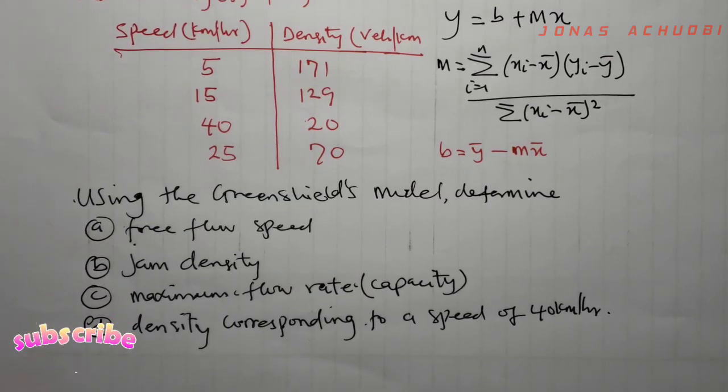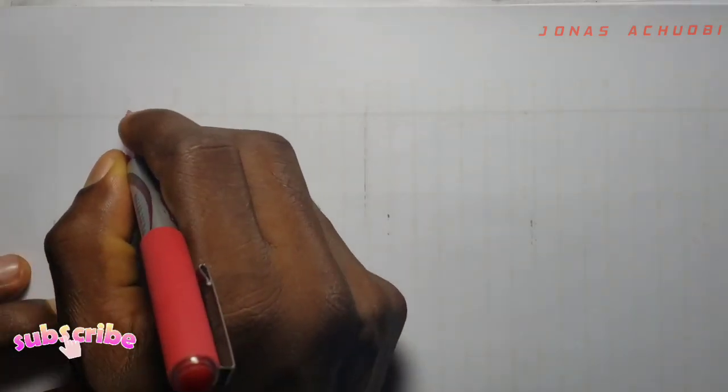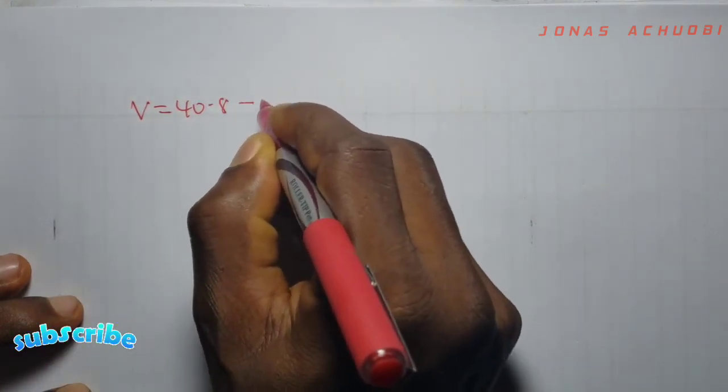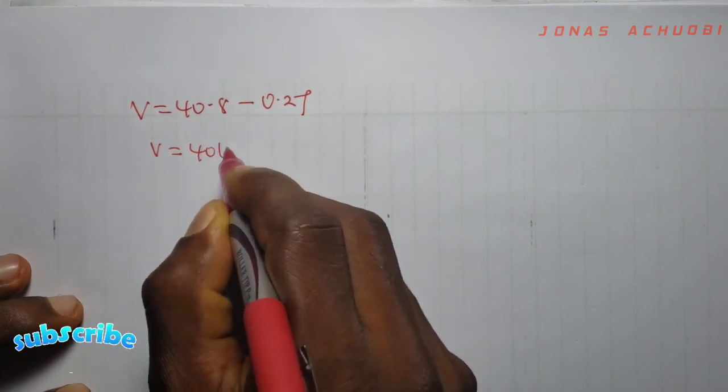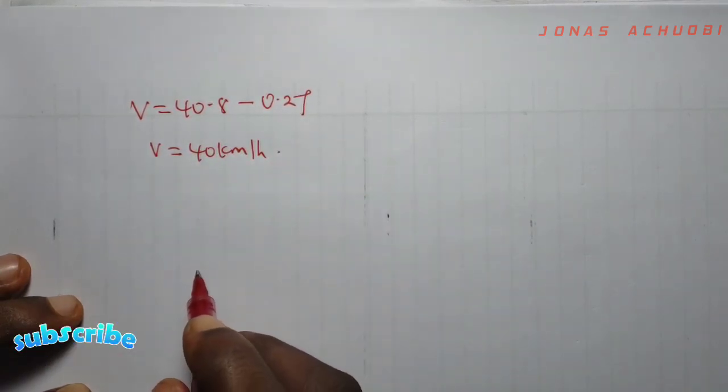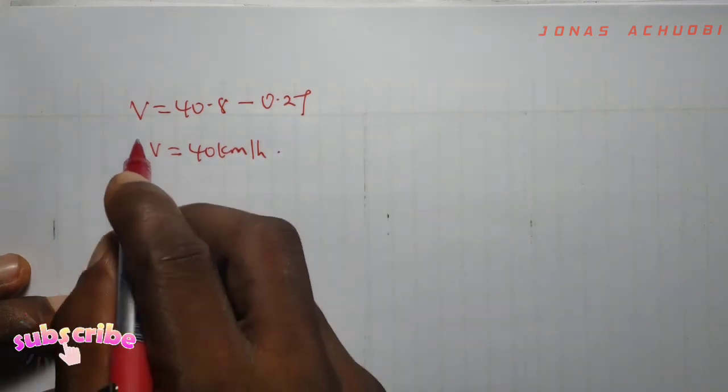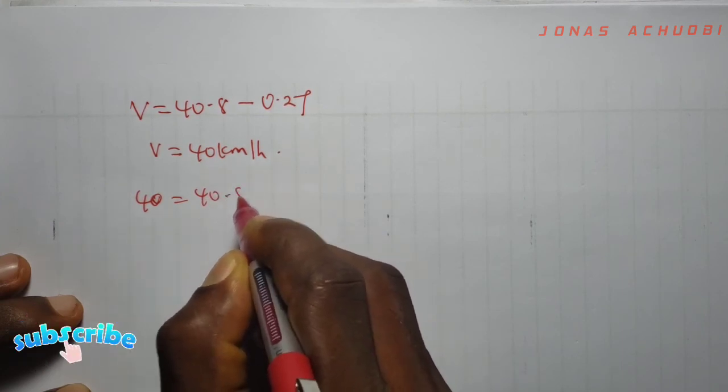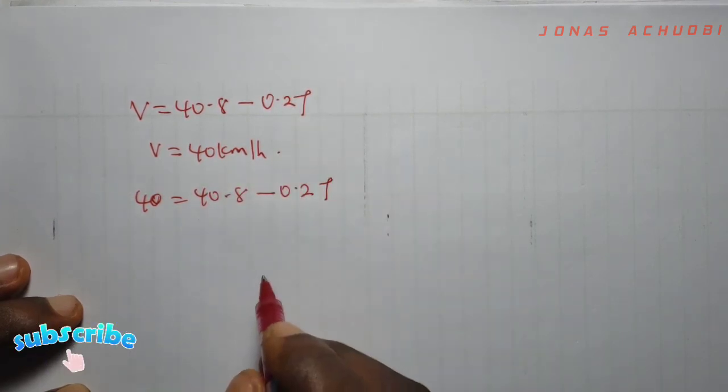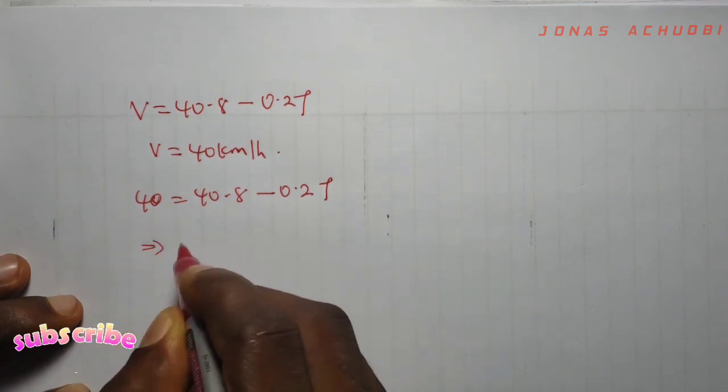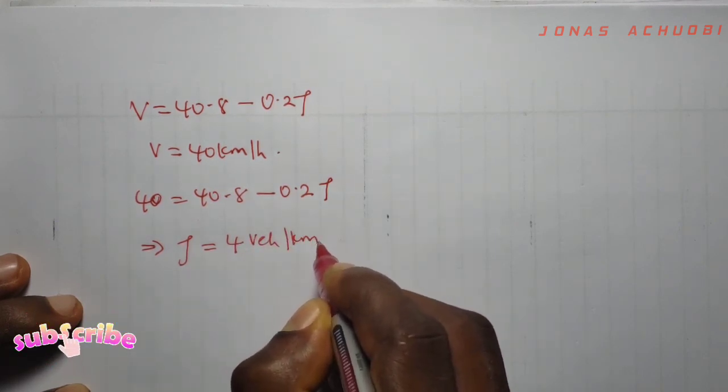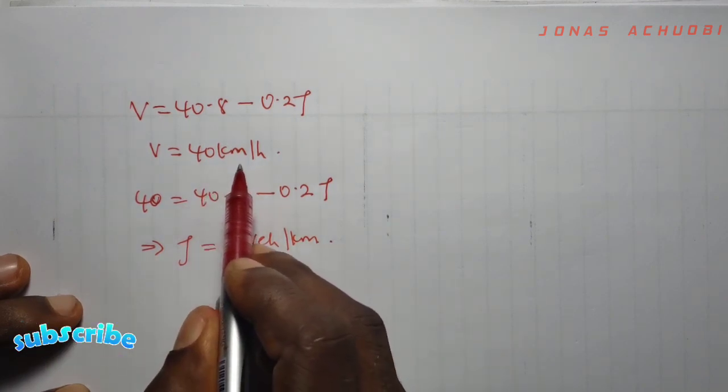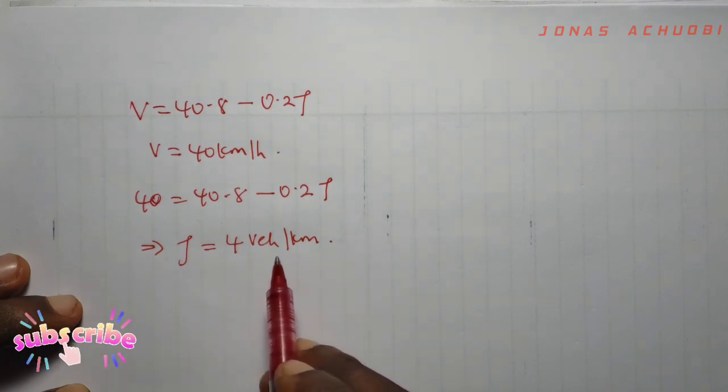The last question says we determine the density corresponding to a speed of 40 km per hour. Our fitted line is V equal to 40.8 minus 0.2 times rho. And we want to know what the density will be given the speed of 40 km per hour. So we substitute 40 into this fitted line. So we have 40 equal 40.8 minus 0.2 times rho. So that if we make rho the subject of the equation, we have that rho is equal to 4. So the density there becomes 4 vehicles per kilometer. This implies that given a speed of 40 km per hour, the density on the road will be 4 vehicles per kilometer.